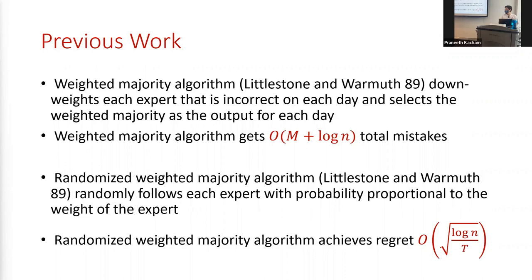There's a question about whether the expectation bound can be made high-probability. This is an issue in our analysis — we use Weighted Majority in some places and get expectation bounds. Regarding why downweighting by 50% specifically: for Weighted Majority, what Littlestone-Warmuth actually do is downweight each expert by 1 minus ε instead of 50%, where ε is a tuning parameter for the multiplicative guarantee.